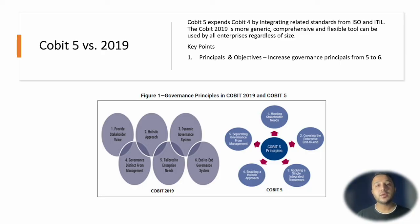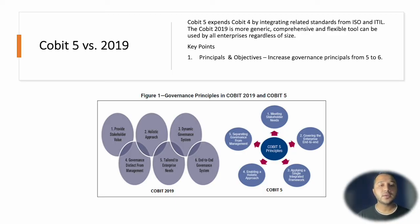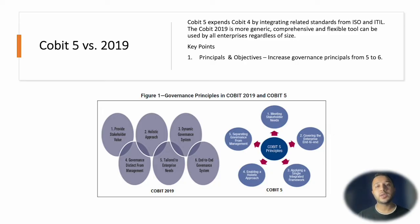One of the key principle changes in COBIT 5 versus COBIT 2019 is that the five principles have been expanded to six. There is now one additional principle, which is 'tailored to enterprise needs.' This is an additional governance principle incorporated in COBIT 2019.